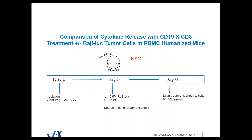So this is the basic format. This is the first experiment done in the base NSG mouse. Once again, irradiate, check PBMCs at day zero. Because we want to capture efficacy, what we do is put in RAGI cells, luciferase labeled, half a million at day five.